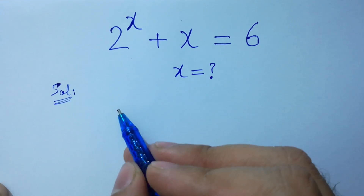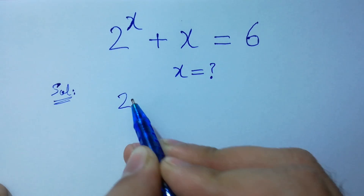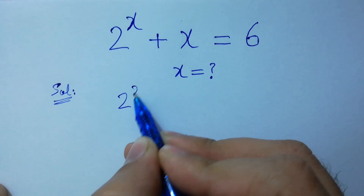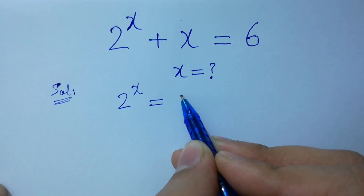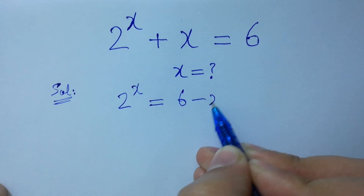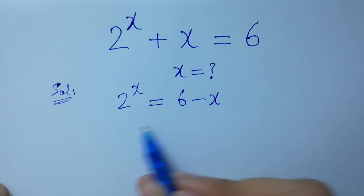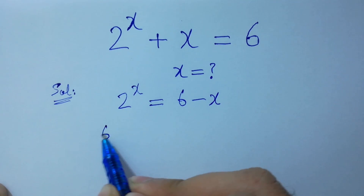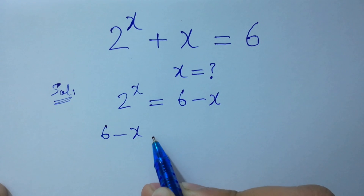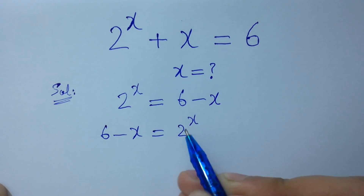To solve this, it can be rearranged as 2 to the power x equals 6 minus x, which is the same as 6 minus x equals 2 to the power x.